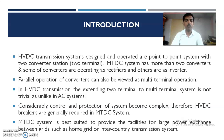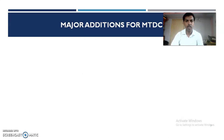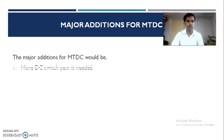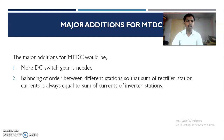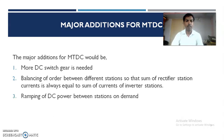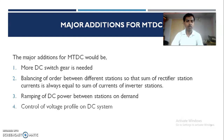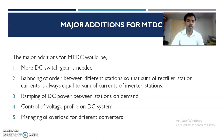Compared to HVDC systems, MTDC systems are best suited to provide the facility for large power exchange between grids, such as home grids or inter-country transmission systems. Major additions for MTDC include: more DC switchgear is required; balancing of power between different stations so that the sum of rectifier station currents equals the sum of inverter station currents; ramping of DC power between stations on demand; and control of voltage profile on DC systems, managing overload for different converters.